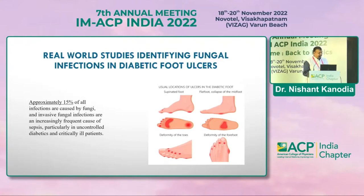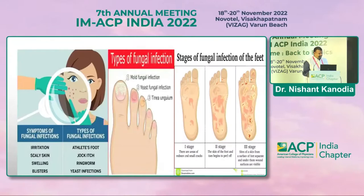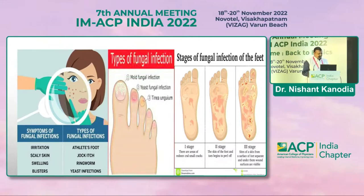Symptoms of fungal infection include irritation, scaly skin, swelling, and blisters, which may be due to mild yeast or tinea. The stages of fungal infection are: Stage 1 — areas of small redness and cracks; Stage 2 — skin of the foot or toe begins to peel off; Stage 3 — separation of the skin that is visible from the wound.